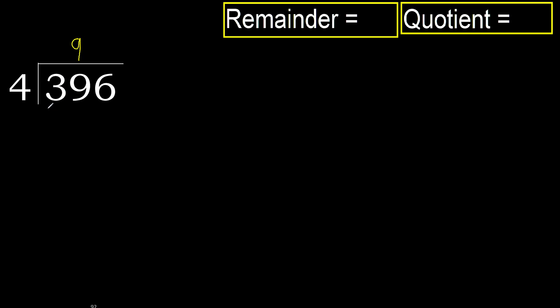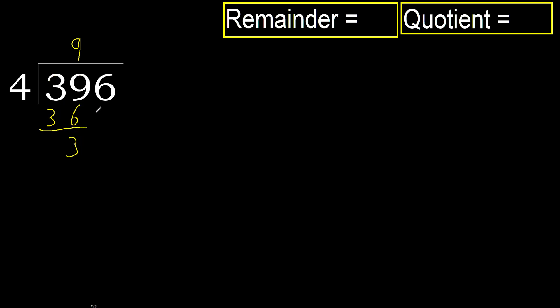Multiplied by 9, 36 is not greater. Ok. Subtract: 39 minus 36 equals 3.